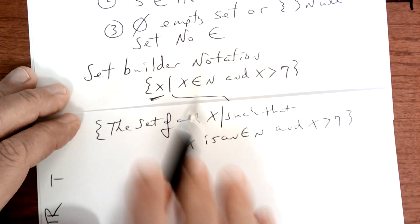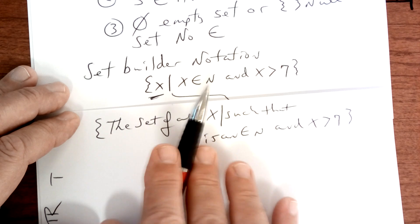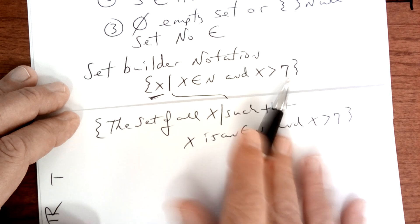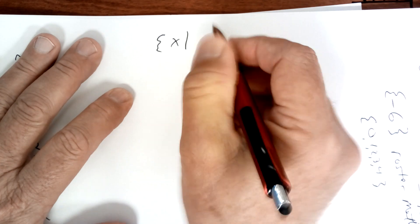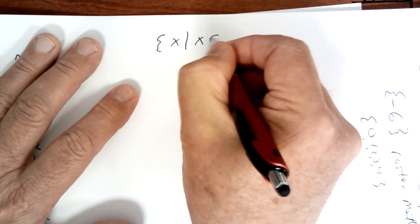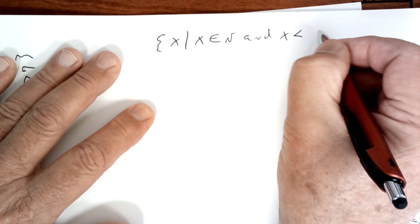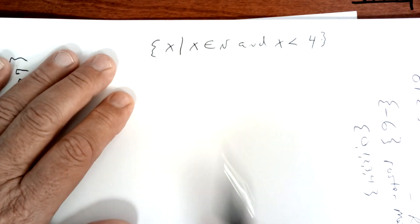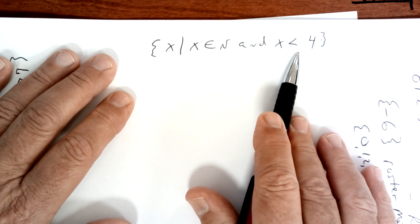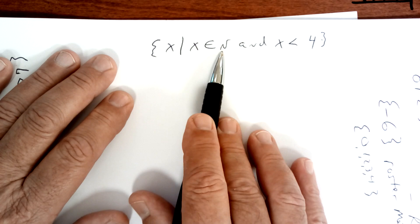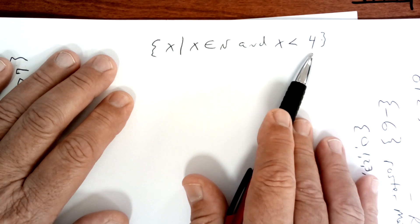The set of all x's, such that x is an element of n and x is greater than seven. Okay, I want you to try one. Write that out in words. Copy that down. Okay, here it is. The set of all x, such that x is an element of the natural numbers and x is less than four. Make sure you say that. Let's go on.